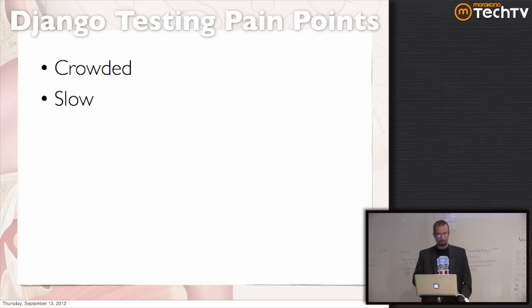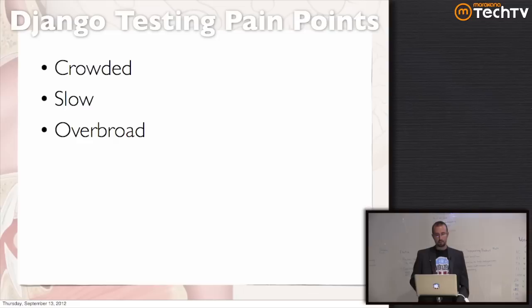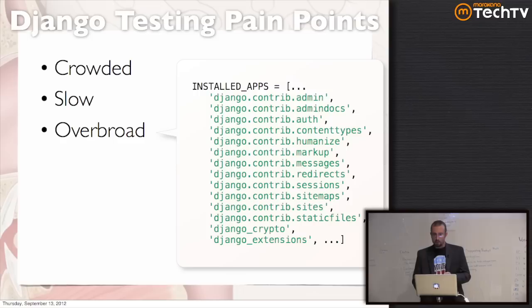Third, the default test runner is kind of overzealous. Not only does it test your code, but it tests everything else that happens to be in installed apps. That's going to be a lot of third-party stuff that's already proven to work. So at best you're testing whether you have the third-party stuff configured right, and at worst you're just wasting your time running tests on things that are already known good.